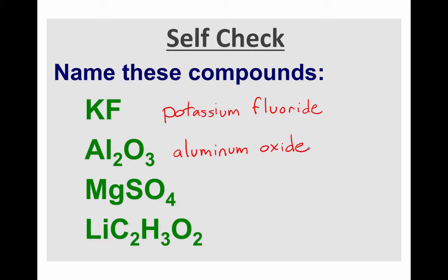The next one, MgSO4. What is the name of that ionic compound? This one is magnesium sulfate. Here we see one of those polyatomic ions that we were learning. SO4 is the symbol for the sulfate ion.